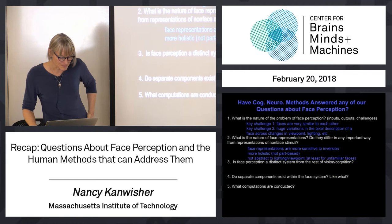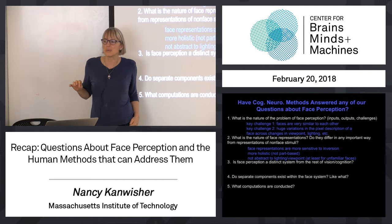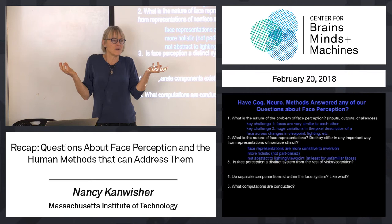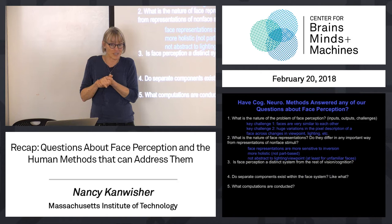We also learned that for unfamiliar faces, people are pretty bad at dealing with the invariance problem — at appreciating the sameness of an individual from two different views or lightings of that person if they don't already know them — suggesting important limitations on our face processing system.